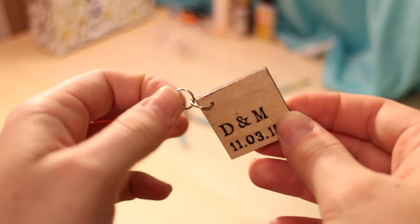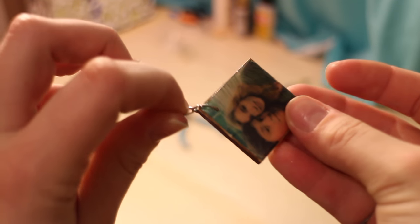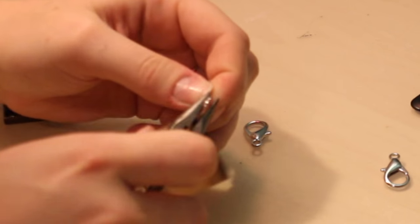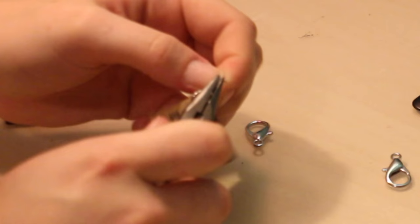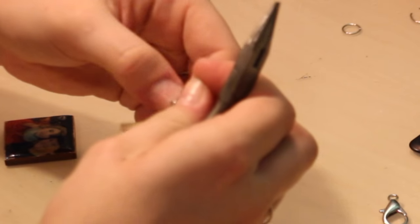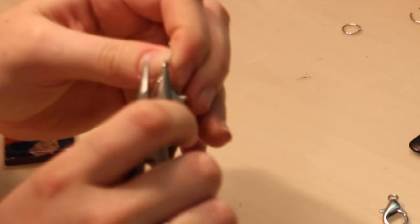This is what it should look like as of now. And then the next step is to take the clipper, the thing - I don't even know what it's called - open up one of the rings and put that on top. And there you have it, your complete keychain.